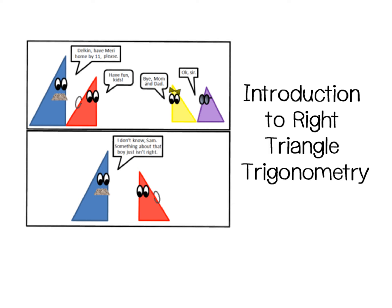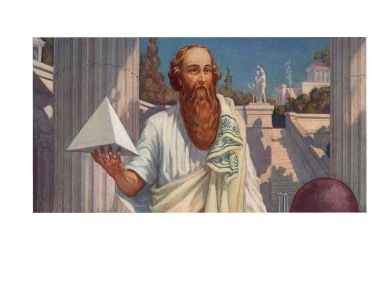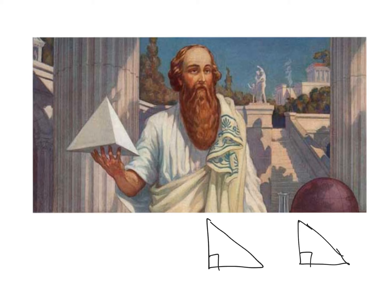We're going to start today with story time. A long, long time ago, Pythagoras and his friends were studying right triangles. We know Pythagoras from the Pythagorean theorem — A squared plus B squared equals C squared — but he also had a hand in realizing that right triangles can be similar. They decided that if you have two right triangles that had another angle in common, like 18 degrees, then those two triangles have to be similar because of angle-angle.